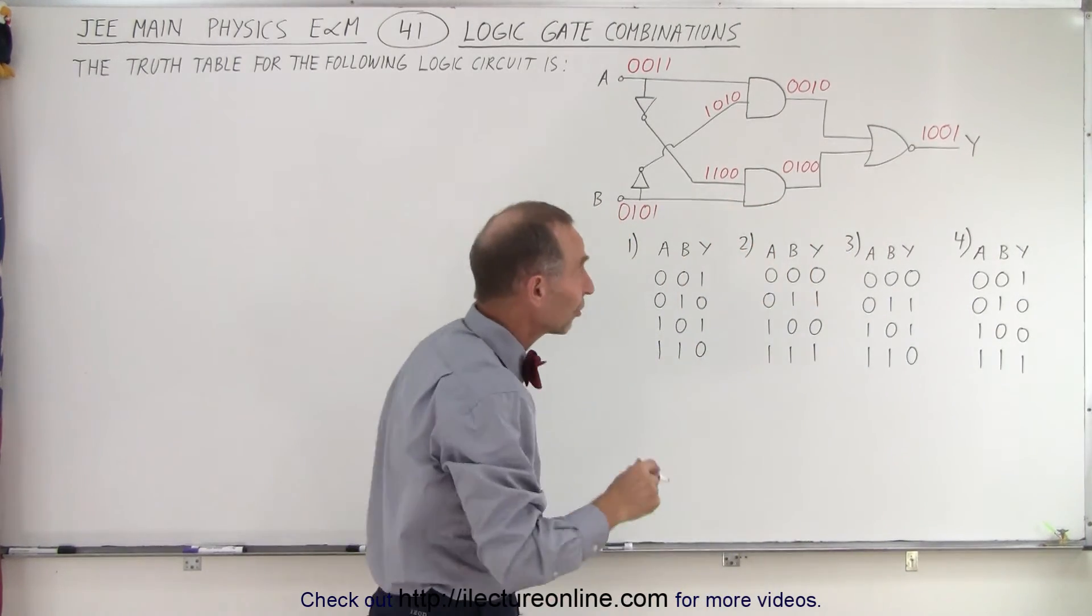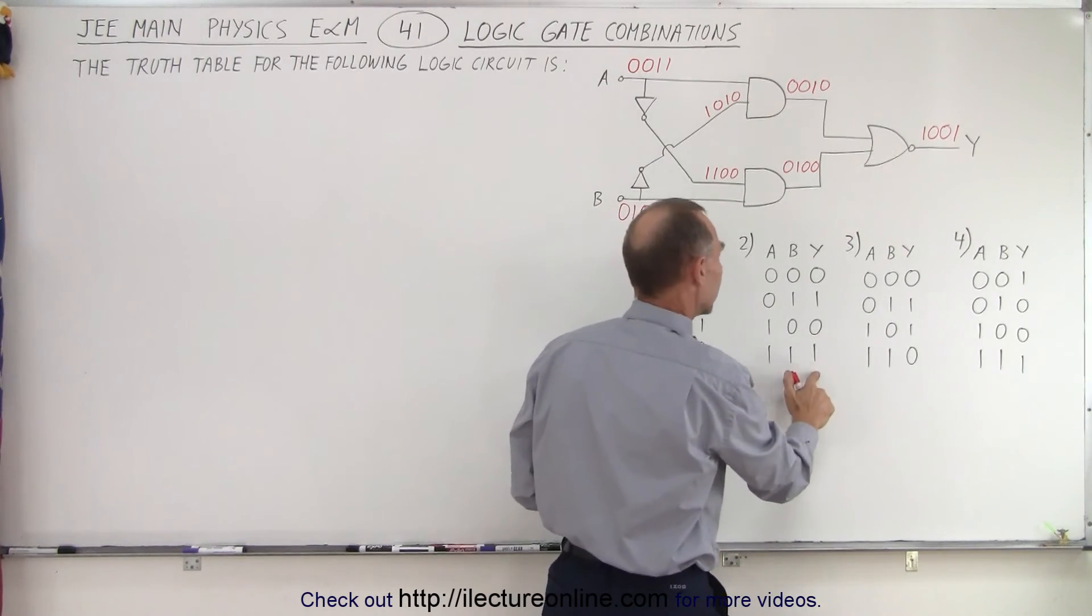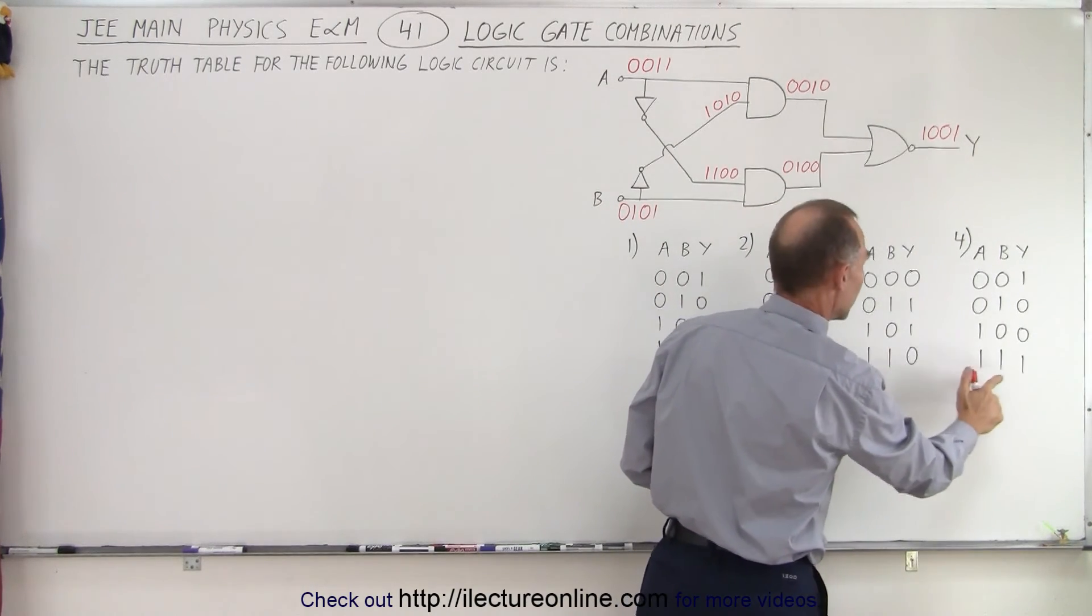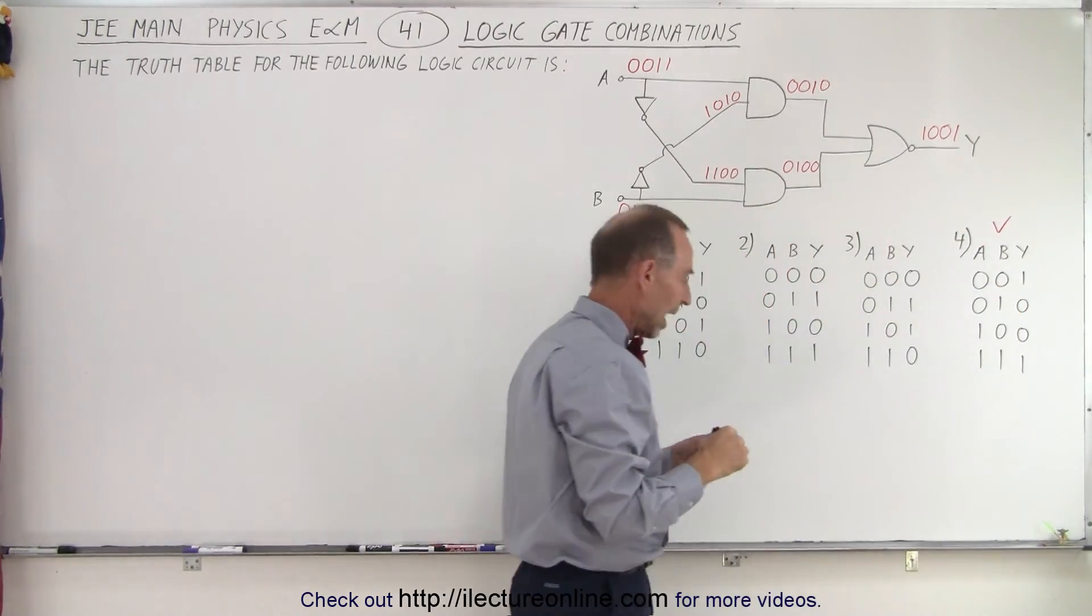Now which of the four answers gives us a 1, 0, 0, 1? Well it's not this one, not this one, not this one, but it's this one. So 4 is the correct answer.